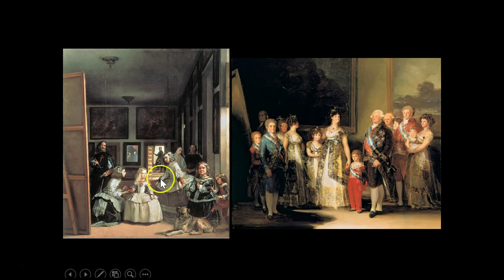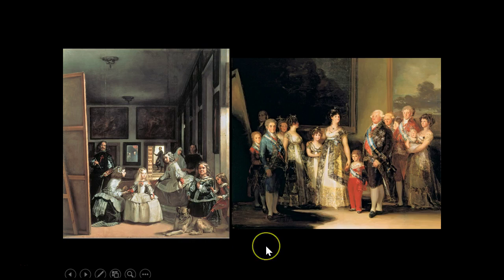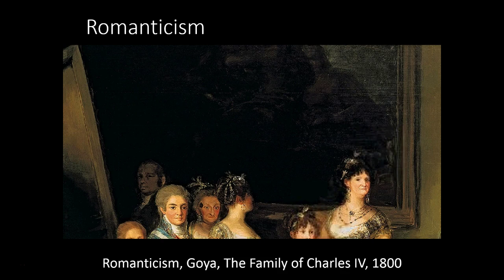The faces are more idealized in Velázquez's interpretation than those of Charles IV's family members. Critics also think that Goya's placement of the canvas between himself and the royal family serves as a barrier, where he sort of isolates himself from the monarchy.